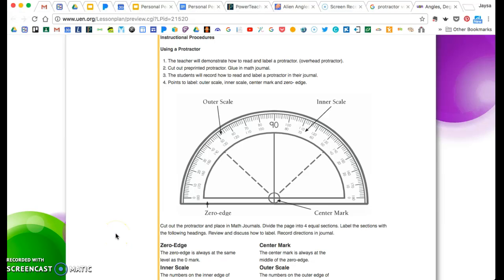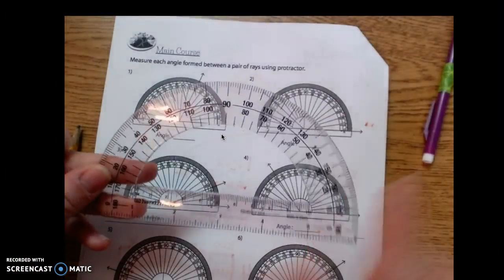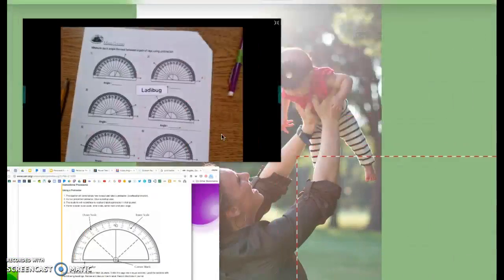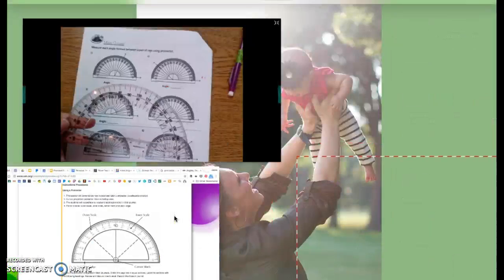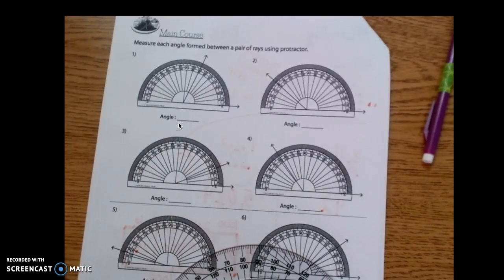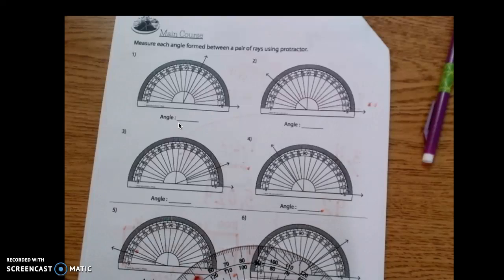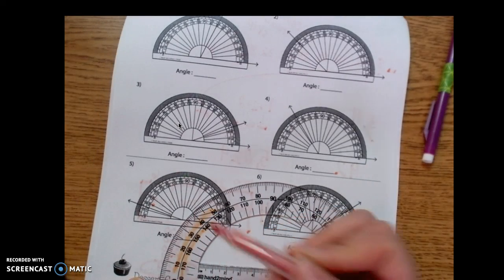On your protractor we are going to start using the terms zero edge. So this right here is the zero edge. The next term is the inner scale and the outer scale. So when you look here, I have the inner scale here and the outer scale here. Inner scale, outer scale.